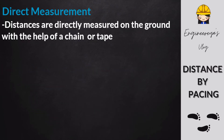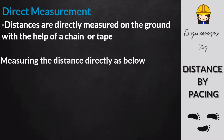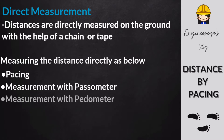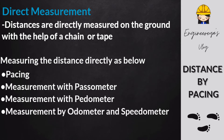In the case of direct measurement, distances are directly measured on the ground with the help of a chain or tape. Measuring the distance directly includes: pacing, measurement with passometer, measurement with pedometer, measurement by odometer and speedometer, and chaining.